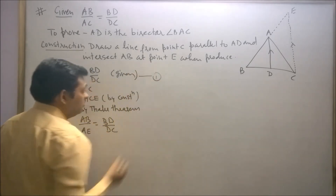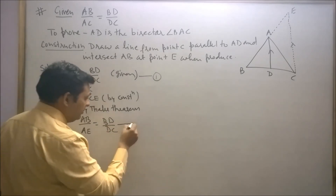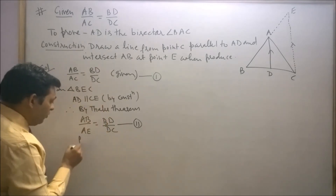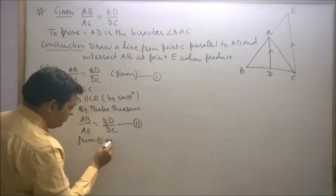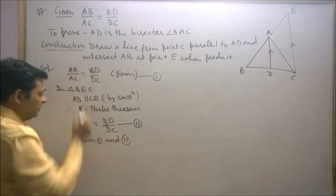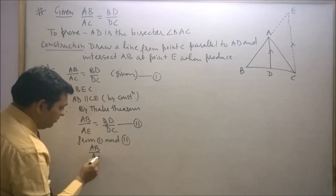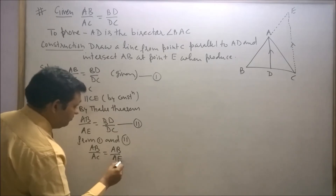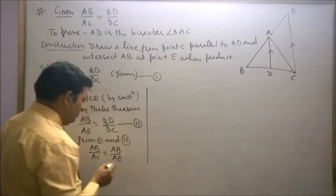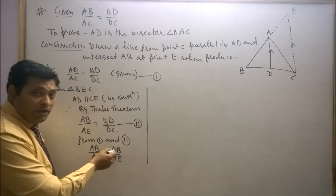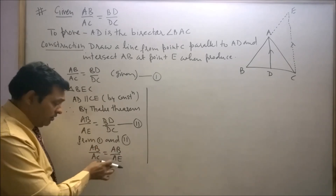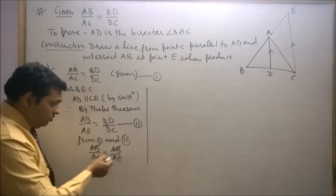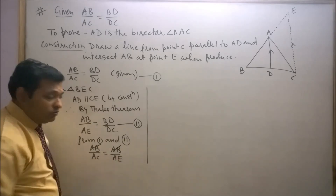So we have proved that AB upon AE equals BD upon DC — this is our second condition. But it is given that AB upon AC also equals BD upon DC — this is our first condition. From conditions one and two, we can say AB upon AC equals AB upon AE. Since the numerators are equal, the denominators must also be equal, so AC equals AE.